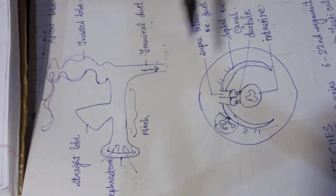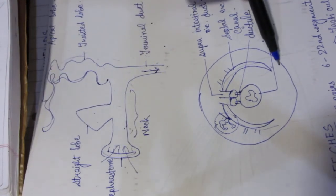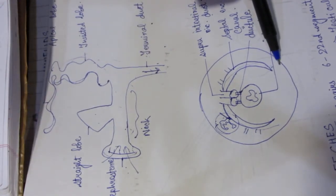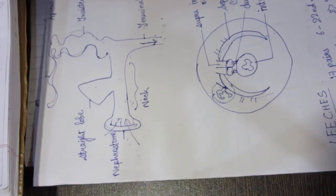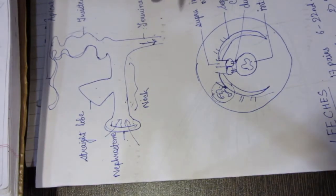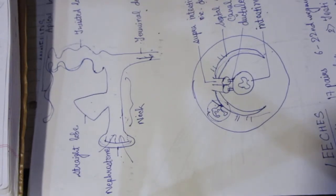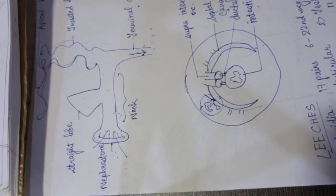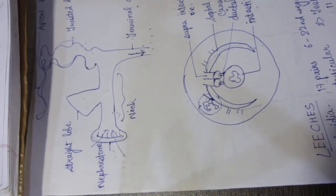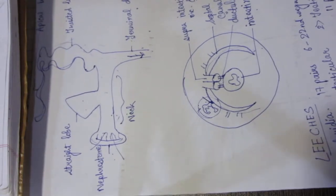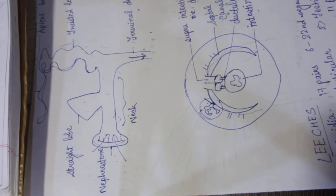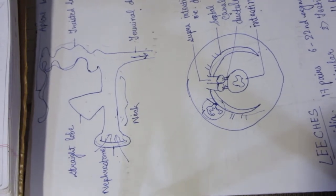This detail is not important from a competitive exam point of view, but for BSC-level subjective or long-answer questions, it may be required. In that case, you need to know which 3 types of nephridia are present in the earthworm.